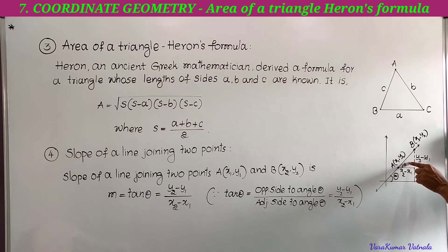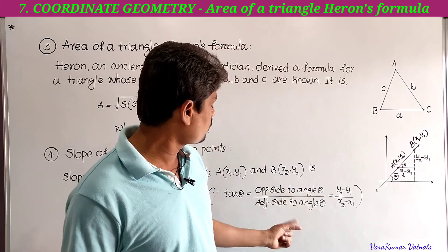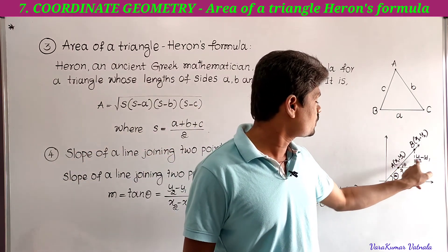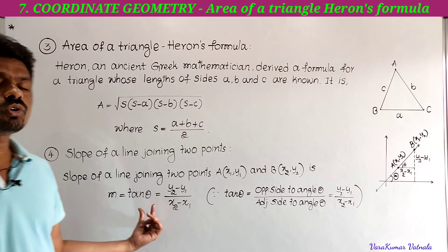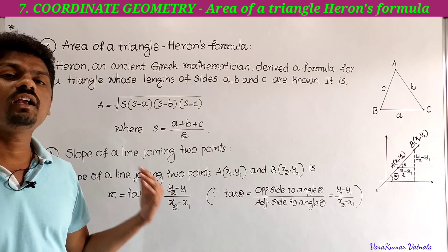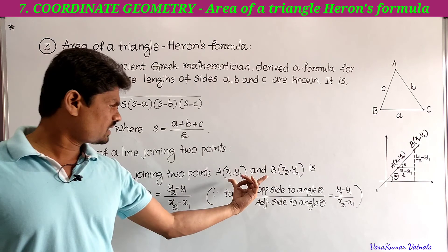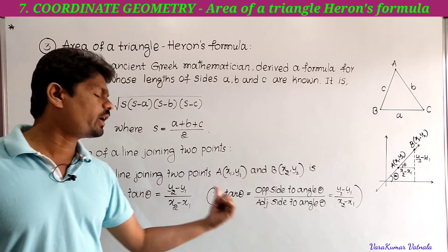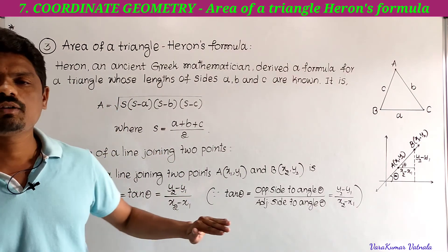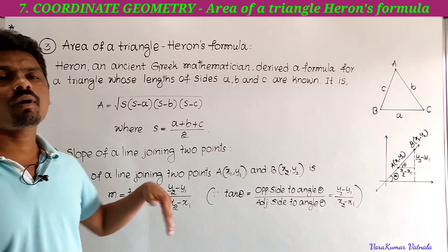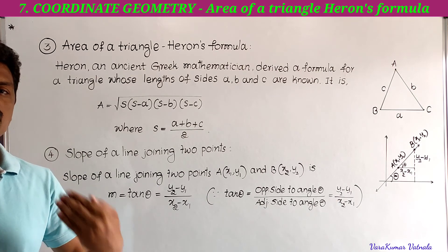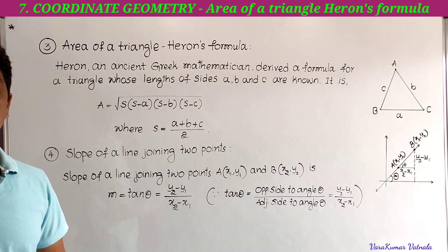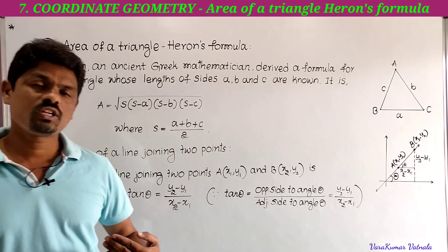Since tan θ = opposite side / adjacent side, and opposite side to angle θ is y2 − y1 while adjacent side is x2 − x1, the slope m = (y2 − y1) / (x2 − x1). If we know the angle directly, m = tan θ. This is a very important formula — you can get a one-mark or objective-type question on it. That's all for today's class; next we solve problems in exercise 7.3.